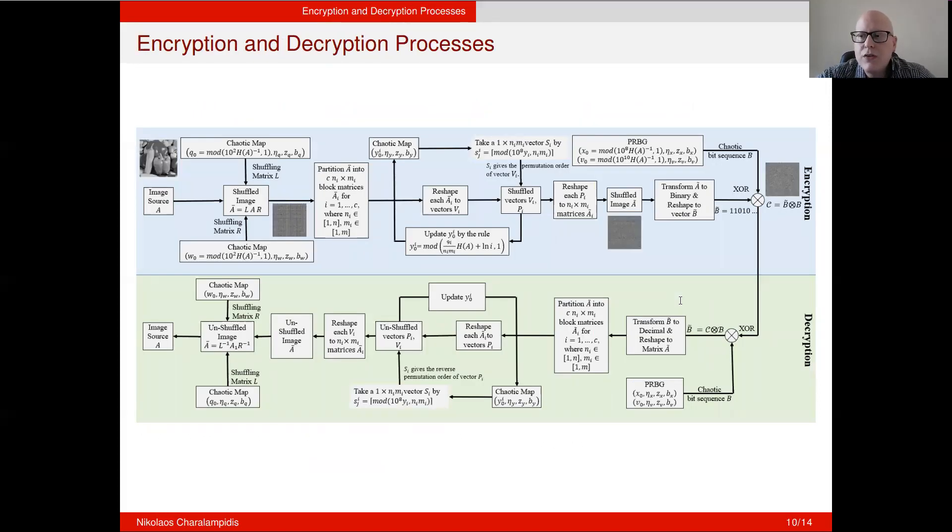The encryption consists of three parts. In the first part, we consider an N times M image A, which is the plaintext image. And by using the proposed chaotic map, as you can see here and here, the definition of the initial conditions is the entropy of the original image. So we use these two chaotic maps in order to obtain a shuffling matrix L and the shuffling matrix R, which L corresponds to the rows. Basically, it shuffles the rows of the image and the matrix R shuffles the columns of the image. So how we do this, we do it by pre-multiplying L with A and post-multiplying that with R to obtain the shuffled image A bar. And you can see it here.